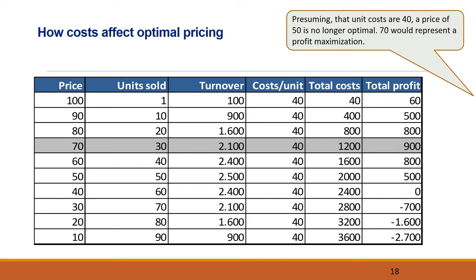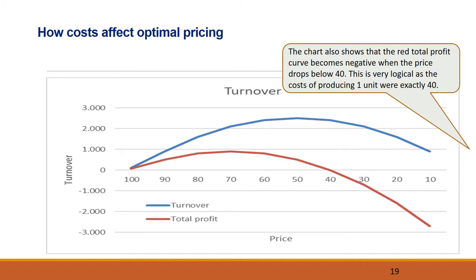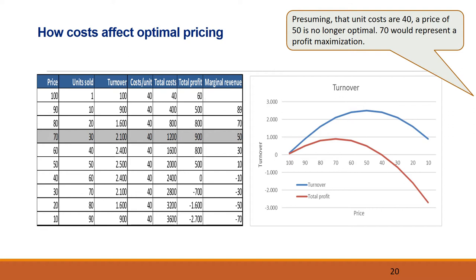When including costs of 40 per unit, it becomes clear that a price of 50 is not profit maximizing, but that a price of 70 is. The difference between maximizing turnover and maximizing profit is further illustrated with the chart. The red total profit curve peaks before the blue turnover curve because the former takes the cost of producing each unit into account. It also shows that the red total profit curve becomes negative when the price drops below 40. This is very logical, as the costs of producing one unit were exactly 40 — so 40 is therefore the lowest price at which it would make sense to sell.